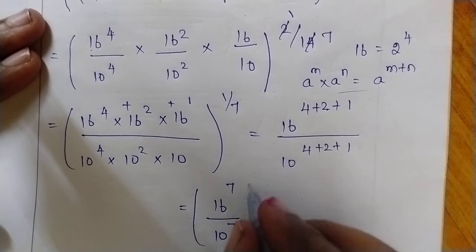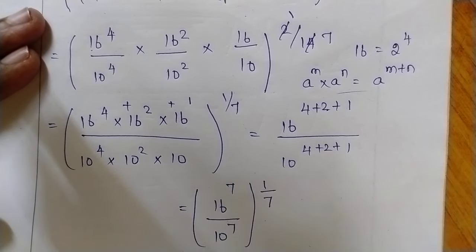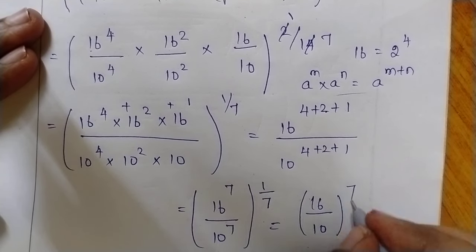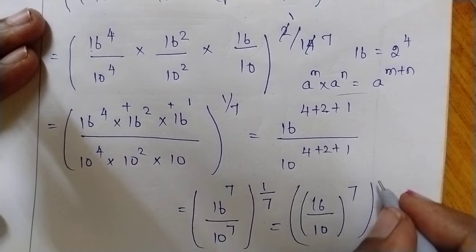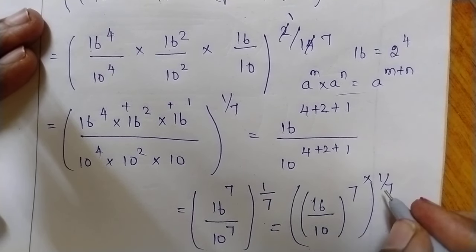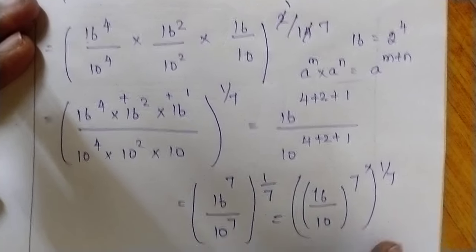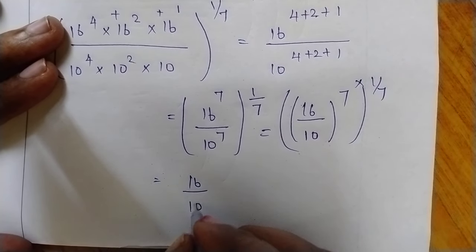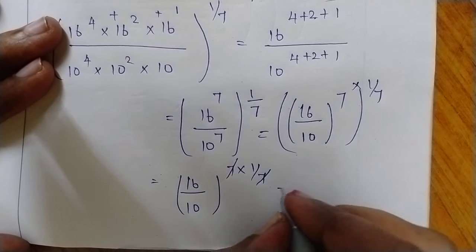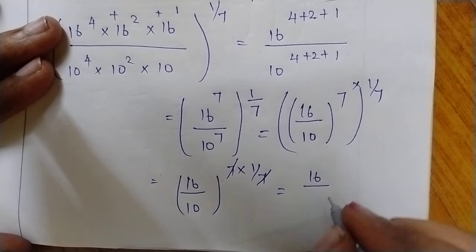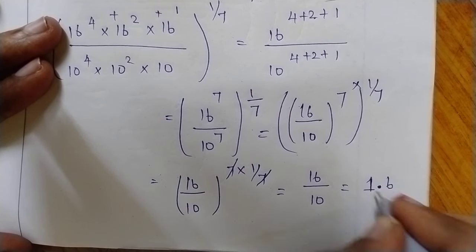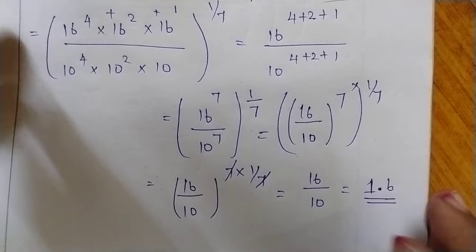Therefore, which is equal to 16 to the power 7, divided by 10 to the power 7, the whole power 1 by 7. This can also be written as 16 by 10, the whole power 7, and the whole power 1 by 7. This is in the format of a power m, the whole power n — we can multiply these two. Therefore which is equal to 16 by 10 the whole power 7 into 1 by 7. The 7s get cancelled, so the answer is 16 by 10, which is also written as 1.6.